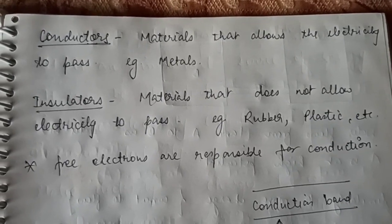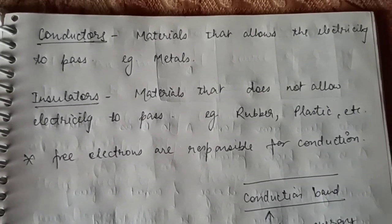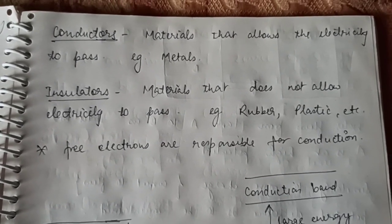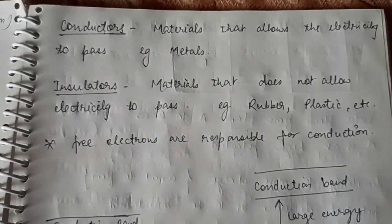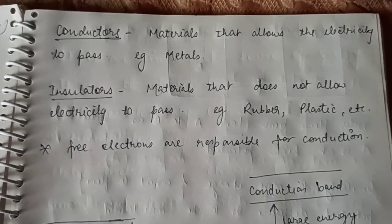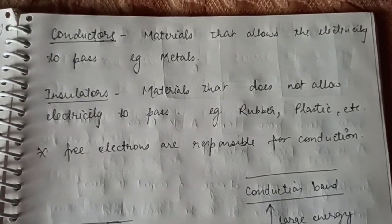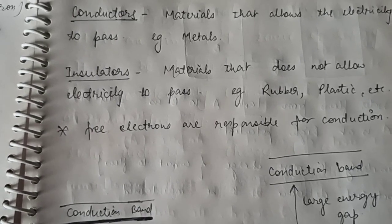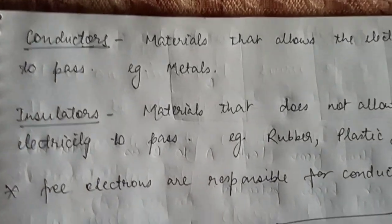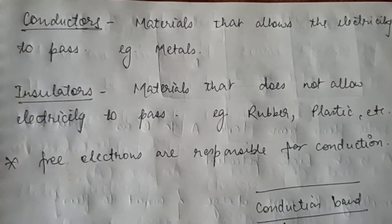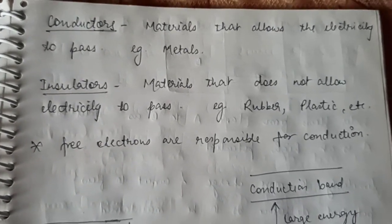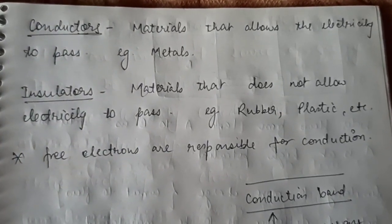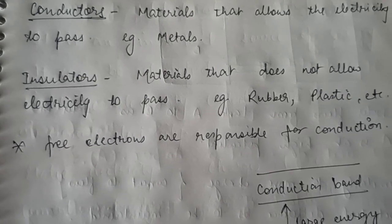There are different materials through which conduction is possible or not possible, so there are two types of materials: conductors and insulators. Conductors are materials that allow electricity to pass through them. For example, rubber and plastic are insulators. The most important factor responsible for conduction is free electrons. In metals there are 1, 2, or 3 valence electrons which are easy for metals to lose, and that makes conduction possible.